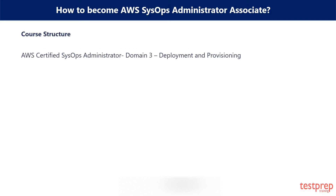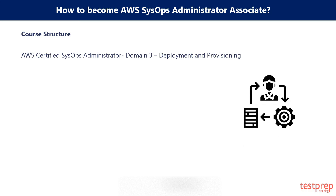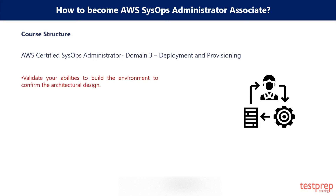Domain 3: Deployment and Provisioning. This domain includes deployment and provisioning with further sections and covers 14% of the total exam weightage. The topics covered include: first, validate your abilities to build the environment to confirm the architectural design; second, ability for provisioning cloud resources and managing the automation implementation.